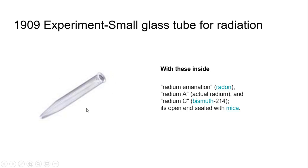They talk about radium emanation, which in reality is radon radium A, which is actually radium, and then radium C, which is actually bismuth 214, all radioactive things. And they covered it up with mica.